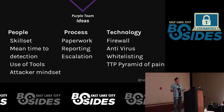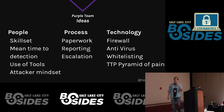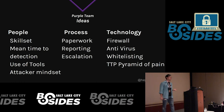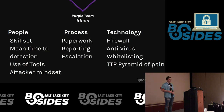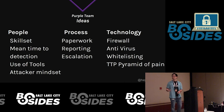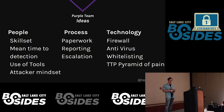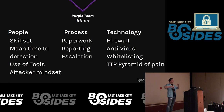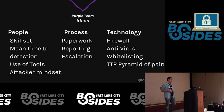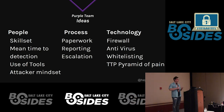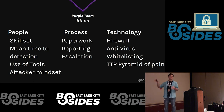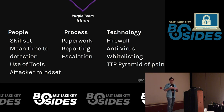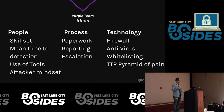To sum up purple teaming, think of it as people, process, and technology. People: different skill sets, mean time to detection. Process: communication, escalation paths, what to do with different subnets. Technology: firewall, antivirus. Purple teaming is about mixing all of this to suit your environment. When a red team is attacking you, it's more like sparring — it's there to help you get better.